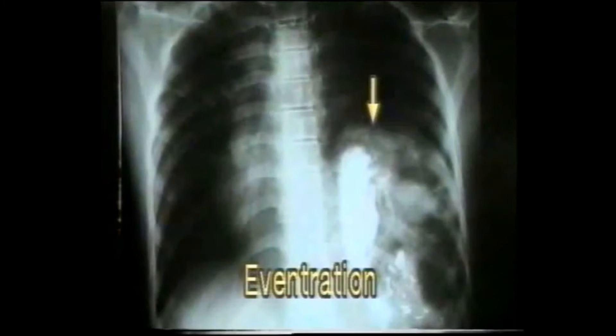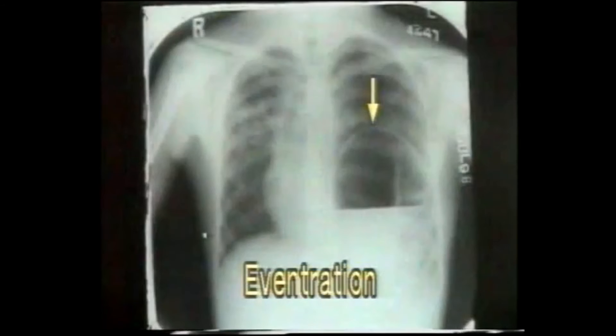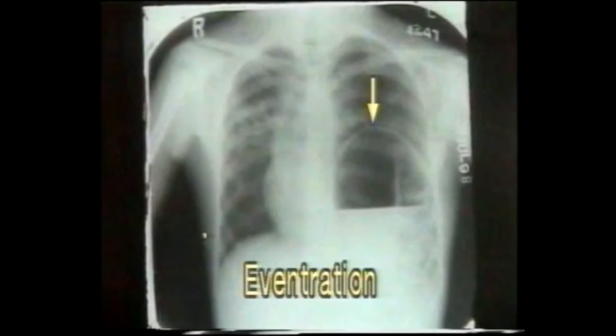Barium meal shows the stomach and intestines in the chest, confirming the diagnosis of eventration. Note the smoothness of the dome of the elevated diaphragm, and the gas shadows and fluid levels.